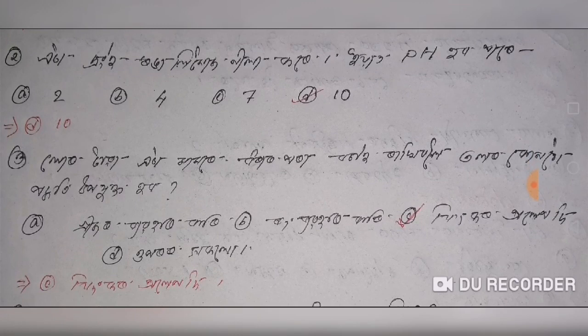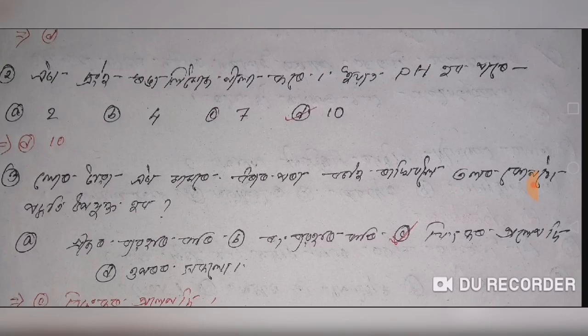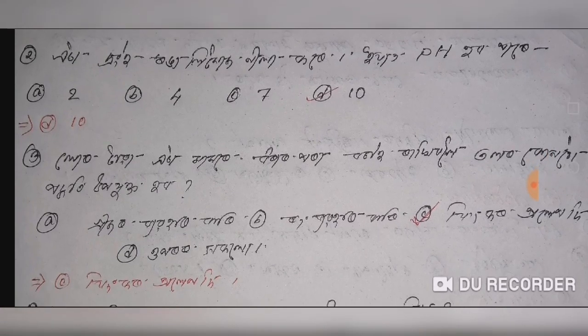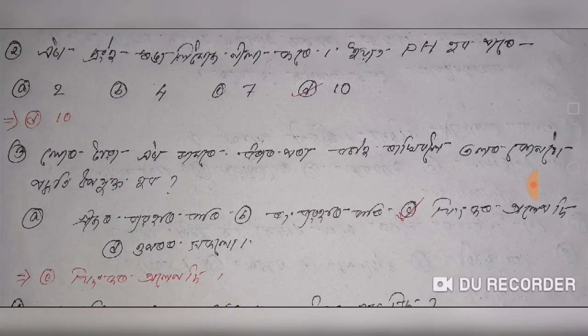It is a problem with brain cells and other cells. It is a problem with brain cells that contain cells from brain cells, which are the same. And pH — 19 to 20, or 10 to 20?